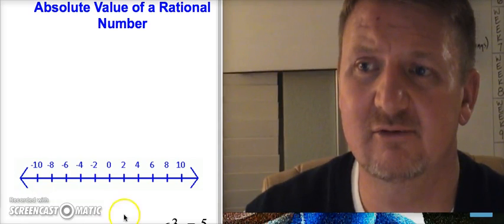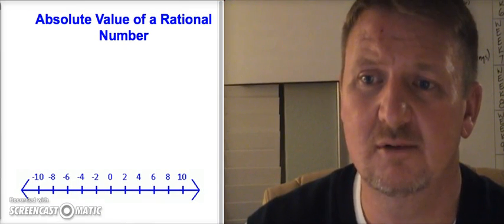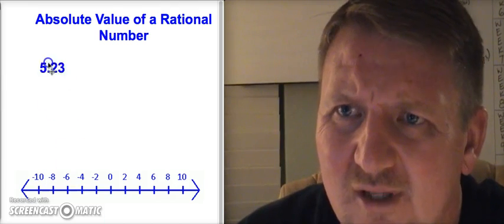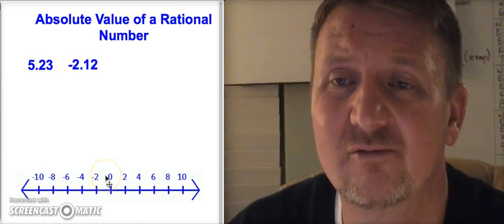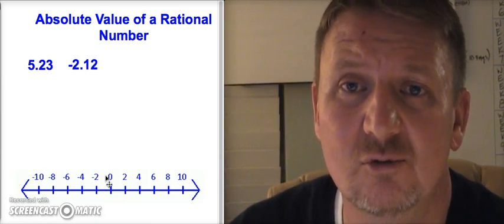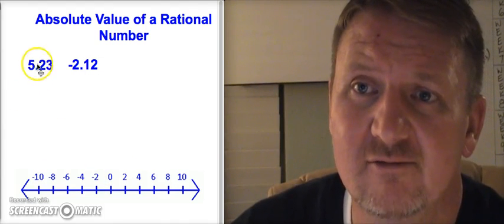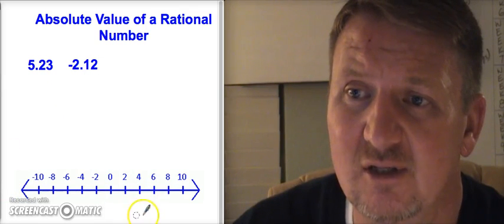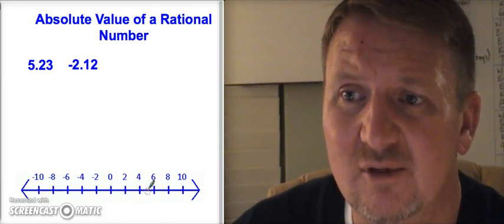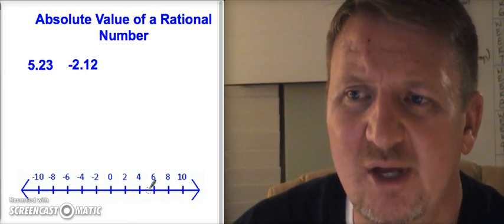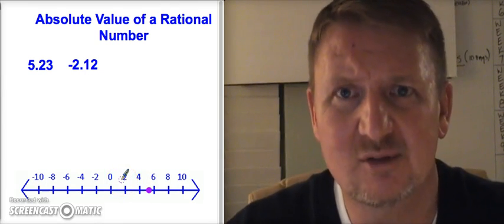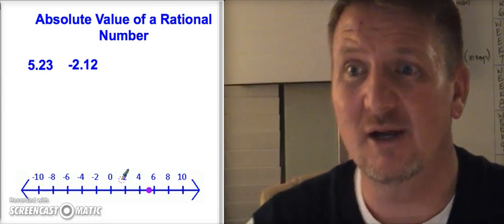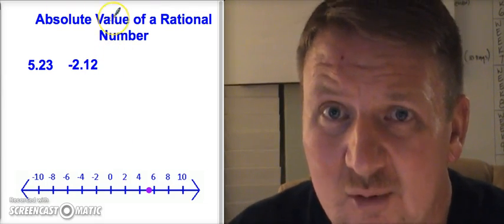Now let's talk about absolute value. To find the absolute value of a number, we find out how far from zero it is on the number line. Our first two examples are five and 23 hundredths, and negative two and 12 hundredths. Five and 23 hundredths is positive, so it goes to the right — it's between four and six, and the .23 makes it just a little past the halfway point. The absolute value answer is always positive.